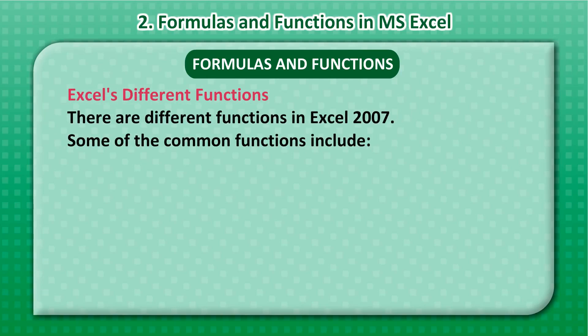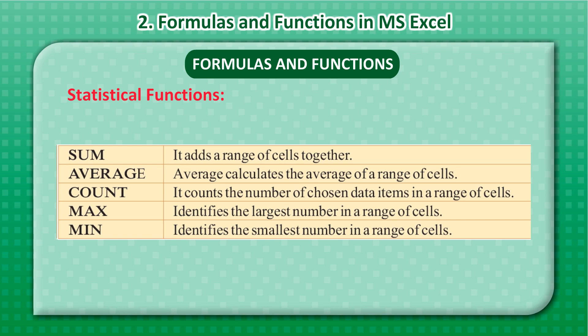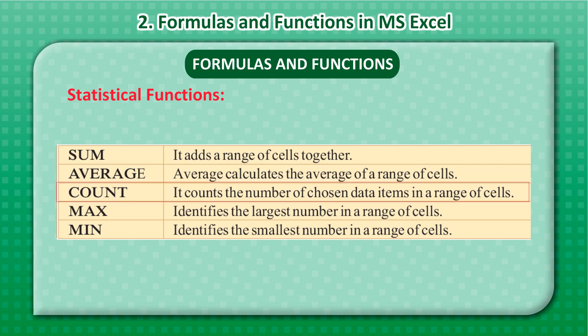There are different functions in Excel 2007. Some of the common functions include Statistical Functions: Sum, which adds a range of cells together; Average, which calculates the average of a range of cells; Count, which counts the number of chosen data items in a range of cells; and Max, which identifies the largest number in a range of cells.